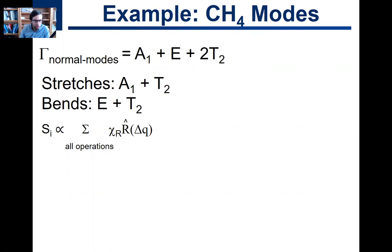We know we have two stretches. We calculated that earlier in the chapter using the stationary bond representation. Those were A₁ plus T₂. And then E and the other T₂ is what's left over, so those are bends. And here's the definition of the projection operator.